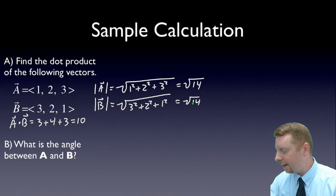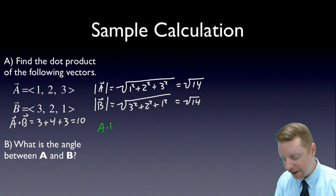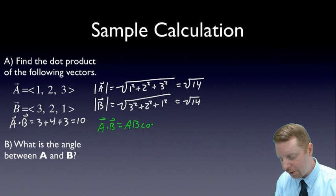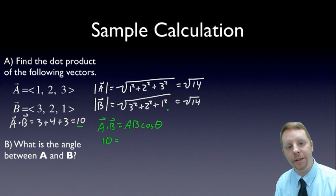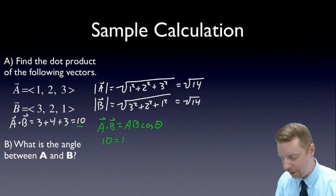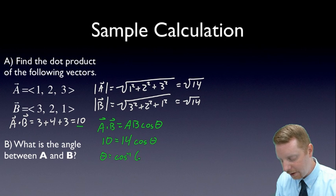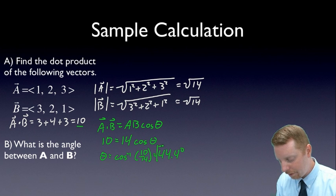Now I can use my definition that A·B equals |A||B| cos θ. A·B, we just found, is 10, so 10 equals |A| times |B|, which is √14 times √14, or just 14, times the cosine of theta. Rearranging this, theta equals the inverse cosine of 10/14, or about 44.4 degrees.